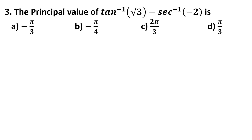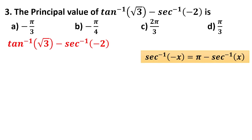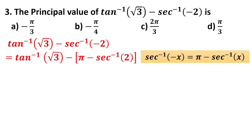Question number 3 is from inverse trigonometric functions. We have to find the principal value of tan inverse(√3) minus sec inverse(-2). For sec inverse(-2), we apply the property: sec inverse(-x) = π minus sec inverse(x). So this becomes π minus sec inverse(2).